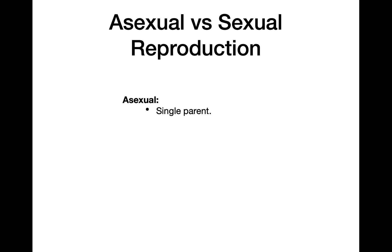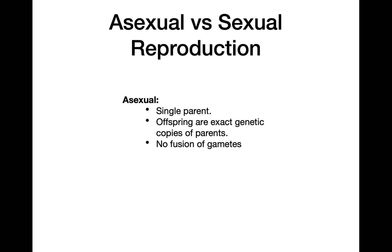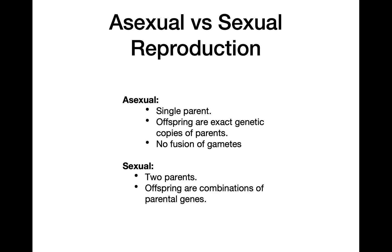In asexual reproduction there is just a single parent, and the offspring are genetically identical to that parent — there's no variation and no fusion of gametes. In sexual reproduction we have two parents, the offspring combine genes from both parents, and there's lots of genetic variation because of this combination process.